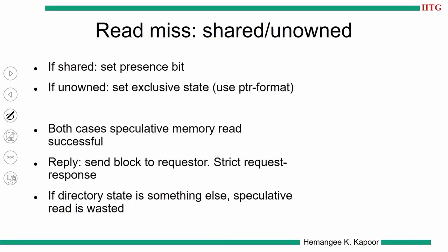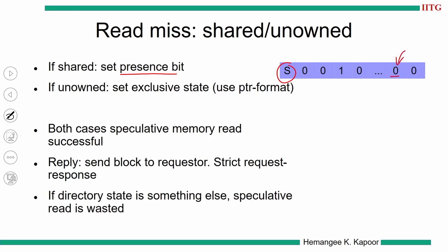We will look at the first case where the directory state could be shared or unowned. If it is shared, that is there are already other sharers, we have the presence bit vector already built up and the directory state is S. We will go to the particular processor ID sending the read request and simply turn that bit to 1. Once this is done, the data which we have read will be sent to the requester and the action completes. We call it speculative because when we read the data block, we are not sure whether this data will be used or not — in case there is a dirty copy in the system, that copy will get utilized. In the current state where the directory state is shared or unowned, the speculative read is successful.